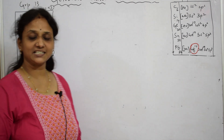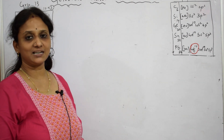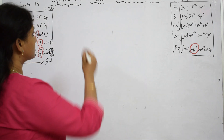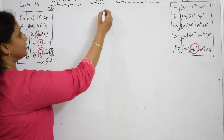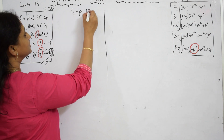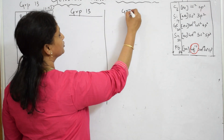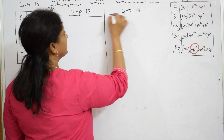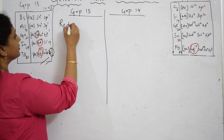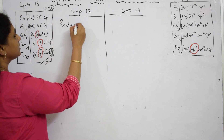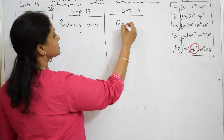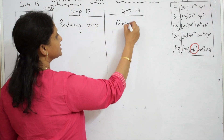Now let us come back and do the last trend: physical properties — very importantly, oxidizing properties and reducing properties. Let us speak in terms of group 13 and group 14. Group 13 elements are discussed in terms of reducing property and group 14 in terms of oxidizing property.